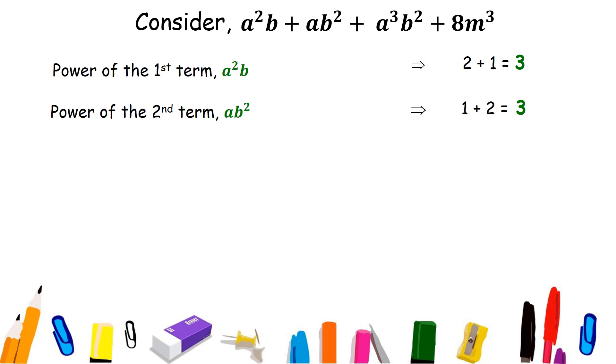In the third term a cube b square, power of a and b are 3 and 2 respectively. So, the power of a cube b square is 3 plus 2, that is 5.